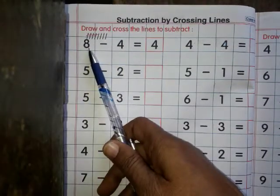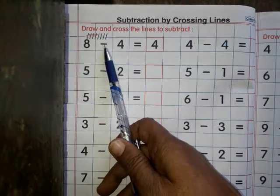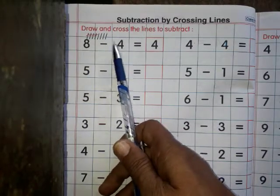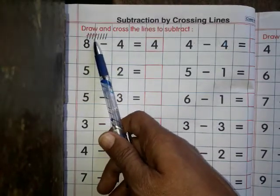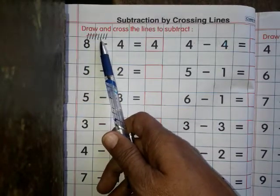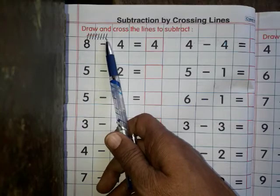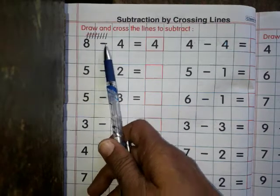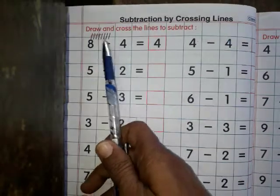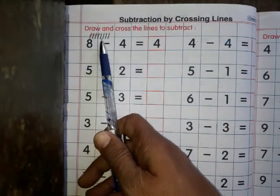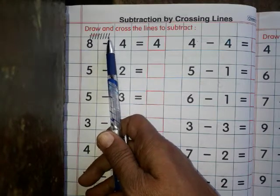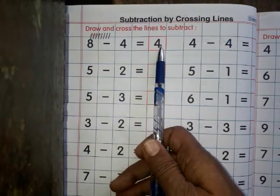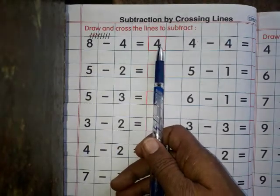देखें, 8 minus 4. यहां 1, 2, 3, 4, 5, 6, 7, 8 lines बनाई हैं। अब minus 4 है, तो 4 lines को हमने cross कर दिया। तो कितना बचा? 1, 2, 3, 4 — answer is 4.